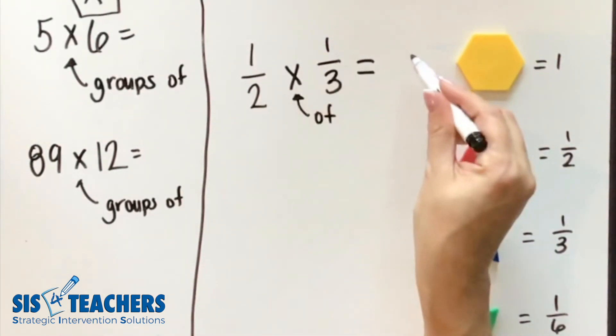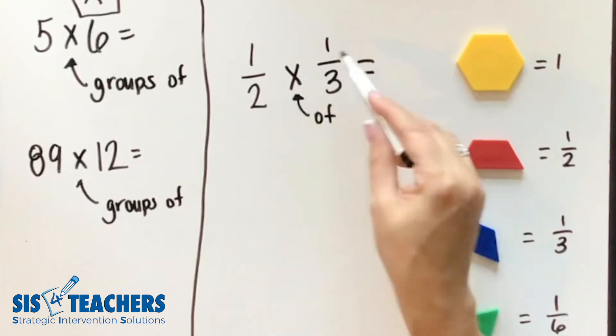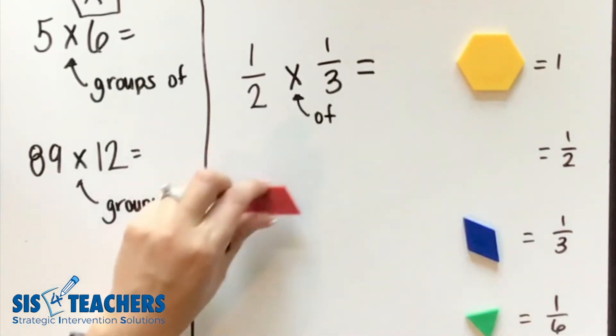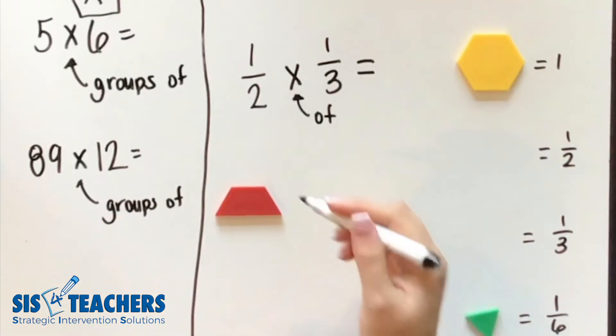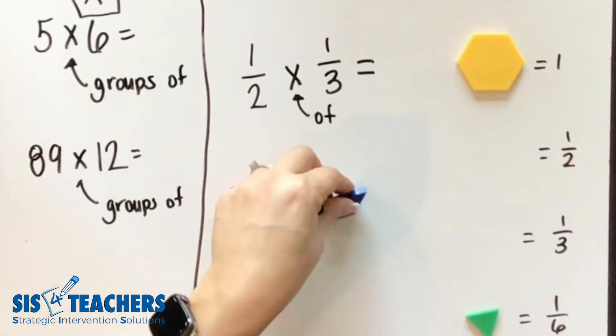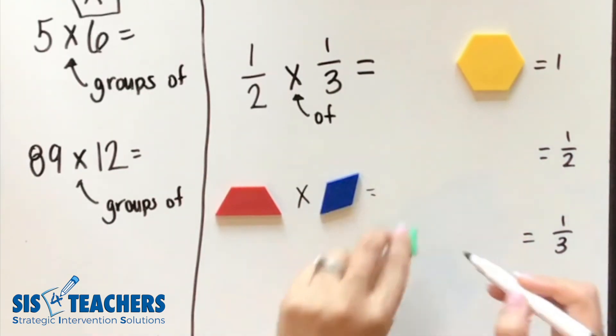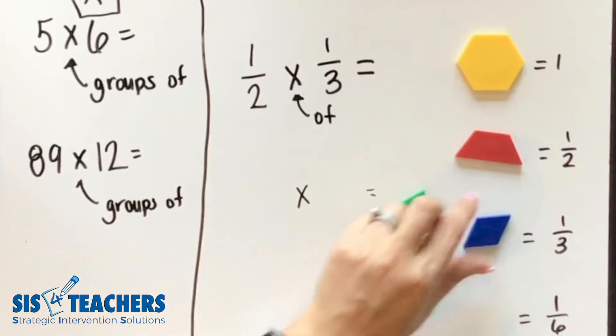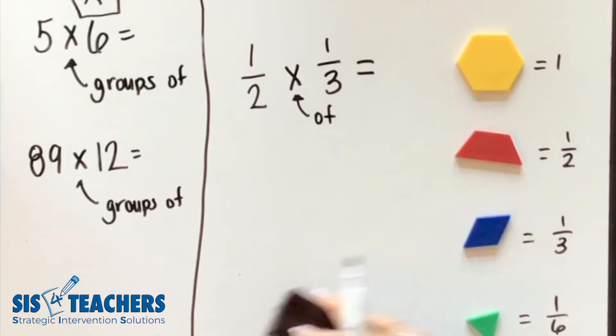Now most of you might know just to go across the top and show that one times one is one and two times three is six. So you might already know the answer is one sixth, but we're trying to challenge your brain today to say: how can you model it? Some students have literally said, I'm going to do one half times one third and it equals one sixth. That's not what we're talking about when we're looking for you to demonstrate your knowledge on a higher level by showing us concretely your conceptual understanding.